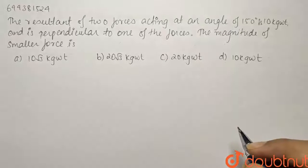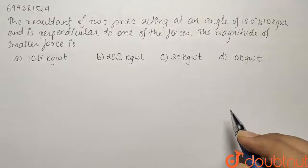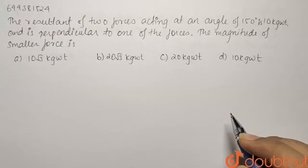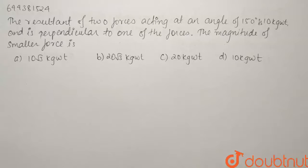Here we have a question from the chapter vectors. The resultant of two forces acting at an angle of 150 degrees, 10 kg weight, and is perpendicular to one of the forces. Find the magnitude of the smaller force.